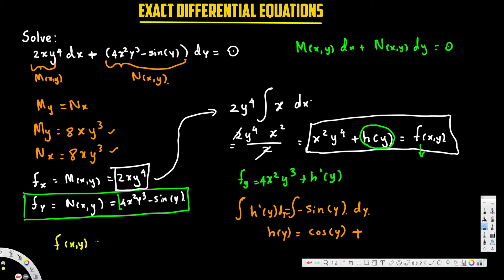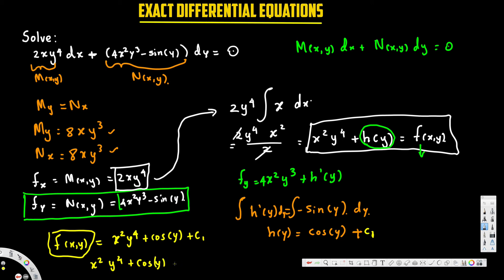Now we can express our final answer. Substituting h(y) back: f(x,y) = x²y⁴ + cos(y) + C₁. Expressing the final solution, we move C₁ to the other side, so the general solution is x²y⁴ + cos(y) = C. This is the complete general solution of the differential equation.